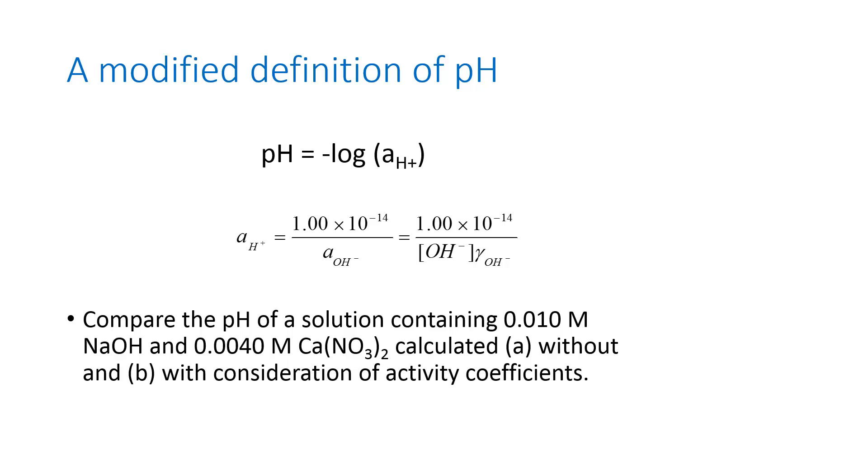In either case, whether we're talking about the new definition of pH or the new definition of the equilibrium constant, we need to remember that activity coefficients are used to modify the concentrations. They're not used to replace it. It's always activity coefficient times concentration instead of just concentration. Thank you.